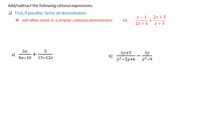As an example, consider x minus 1 over 2x plus 6, plus 2x plus 5 over x plus 3. Note that 2x plus 6 can be factored — we have a greatest common factor of 2. We then have x minus 1 over 2 times x plus 3, plus 2x plus 5 over x plus 3. Note that x plus 3 is a common portion of the denominator.